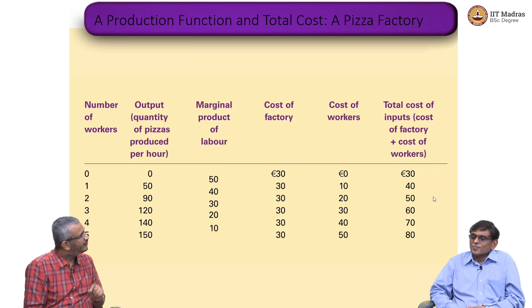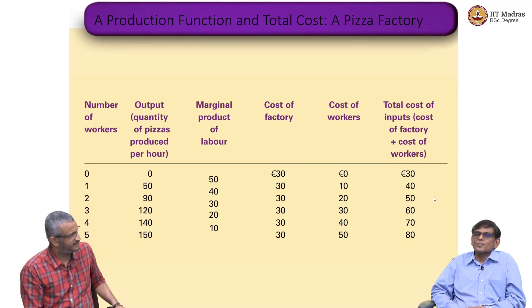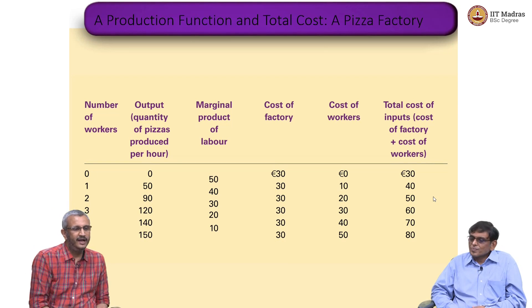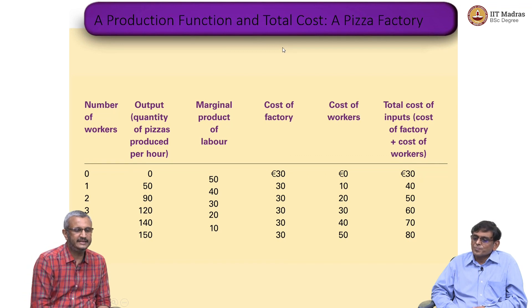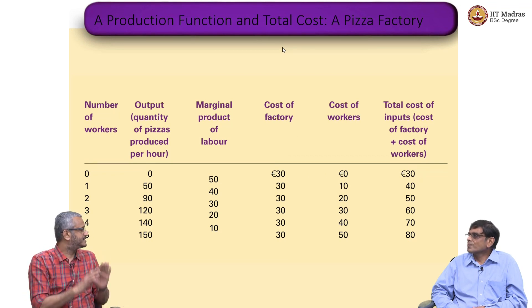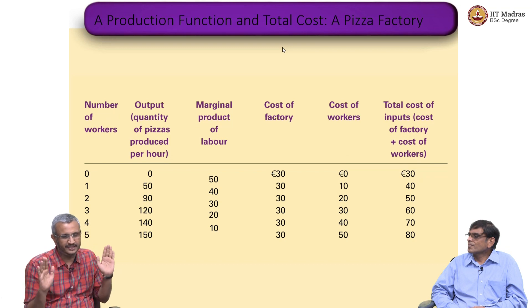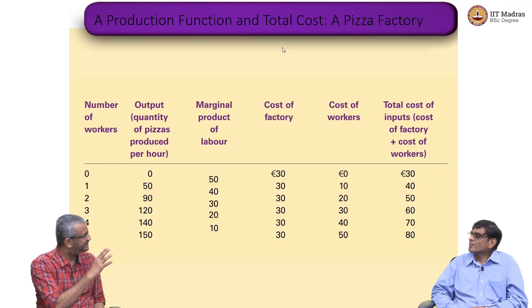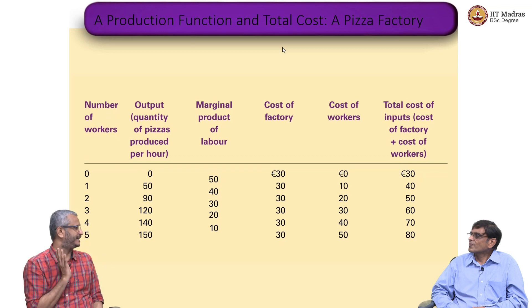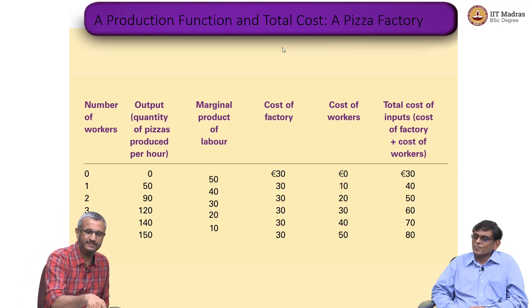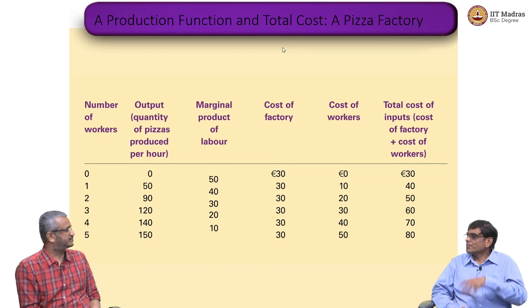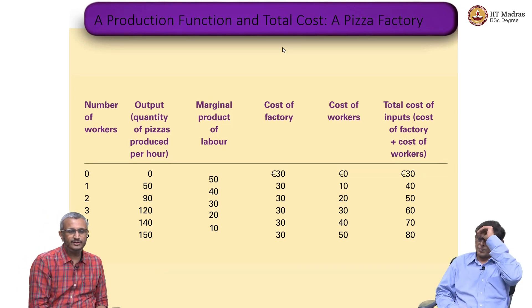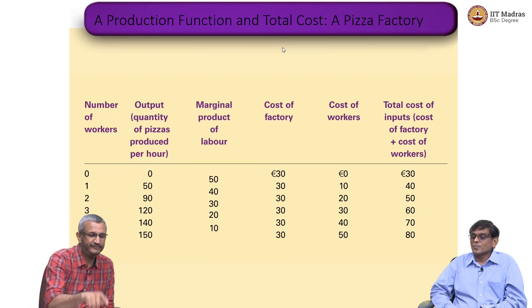Broadly, these are the concepts of cost. Let me just show some numbers so the concepts are a little clearer. I am going to start this pizza factory — I have just bought the land, machinery, everything, and I am going to start production. I have bought the factory shed as well as the machinery for making pizza. That initial investment is going as 30 euros or 30 dollars — and that is a fixed cost.